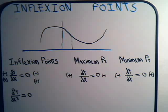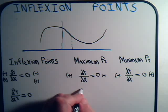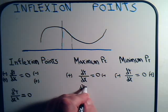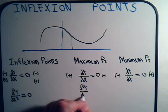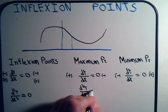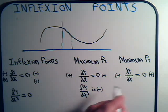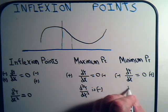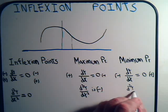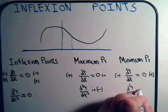Now, we also pointed out in that previous video on turning points that for a maximum point, the second derivative is negative, and for a minimum point, the second derivative is positive.